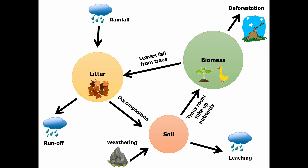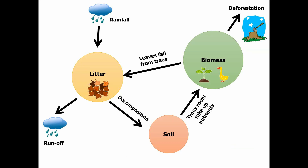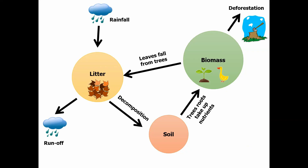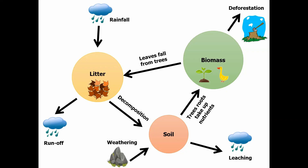So just to summarise: we've got those three stores — biomass, litter, and soil. Nutrients are constantly moving between them, and they're also being added into or lost from each of those stores by various processes.